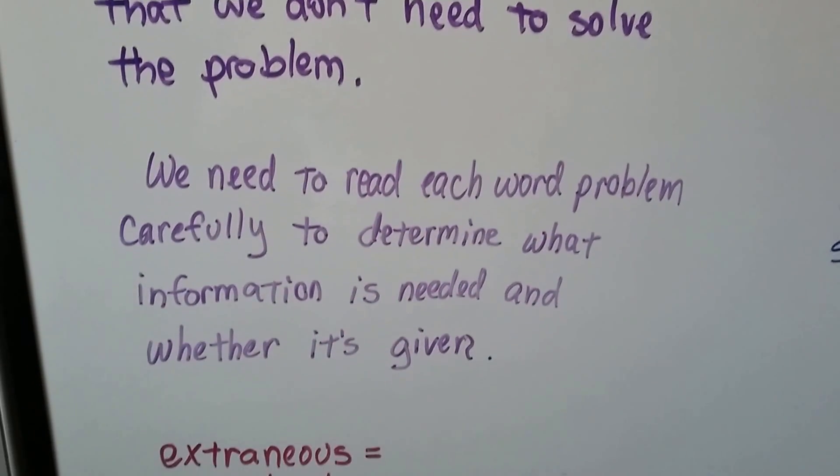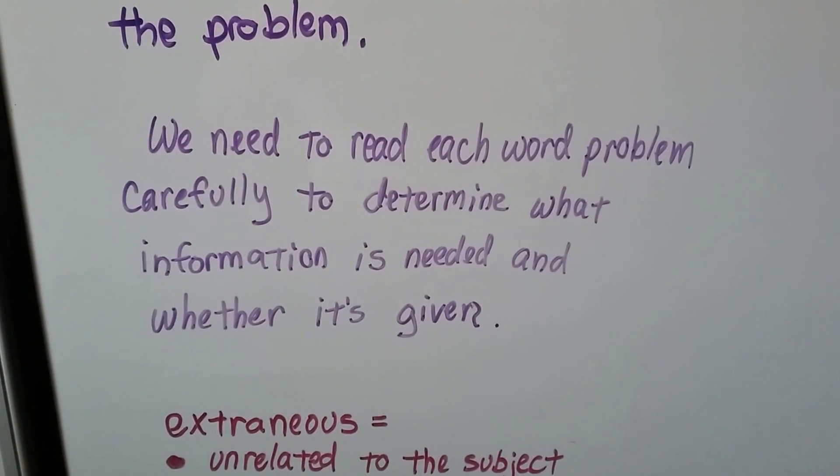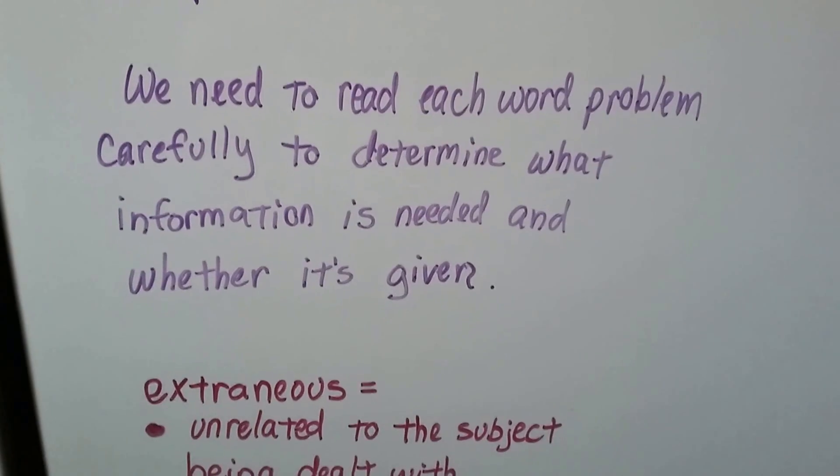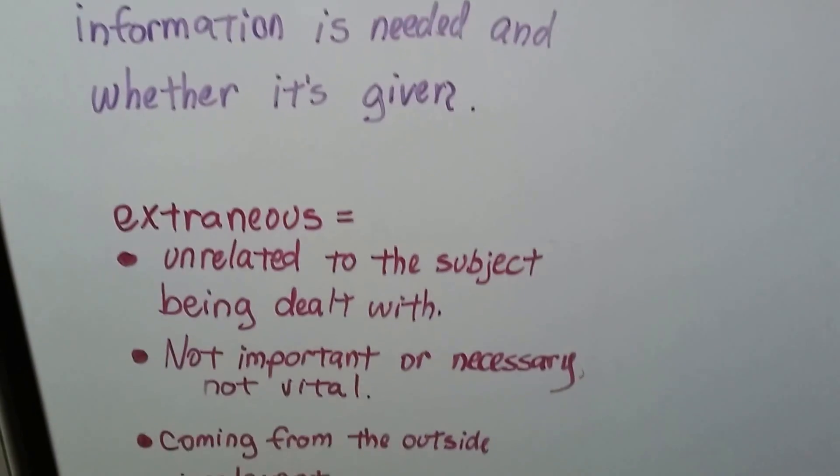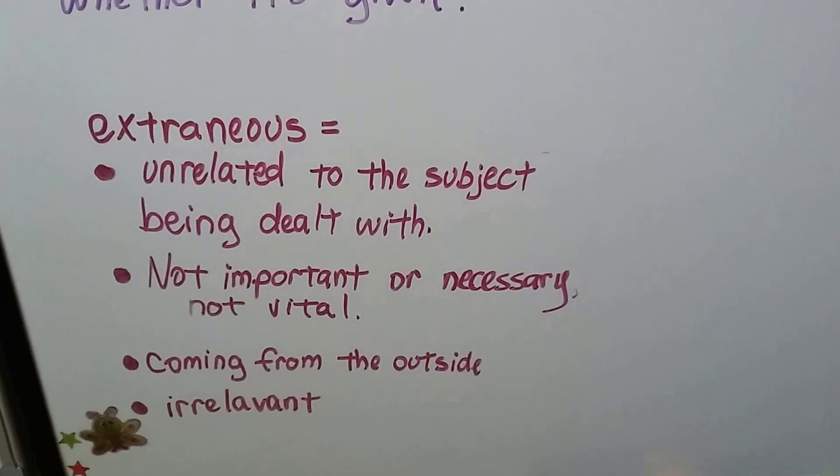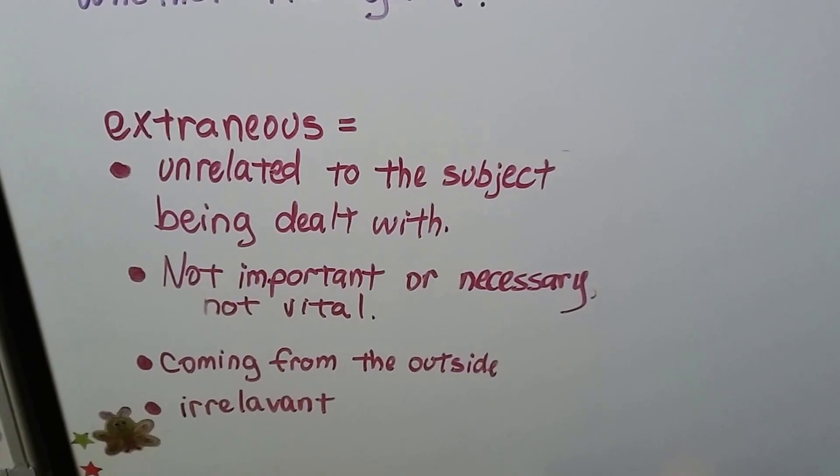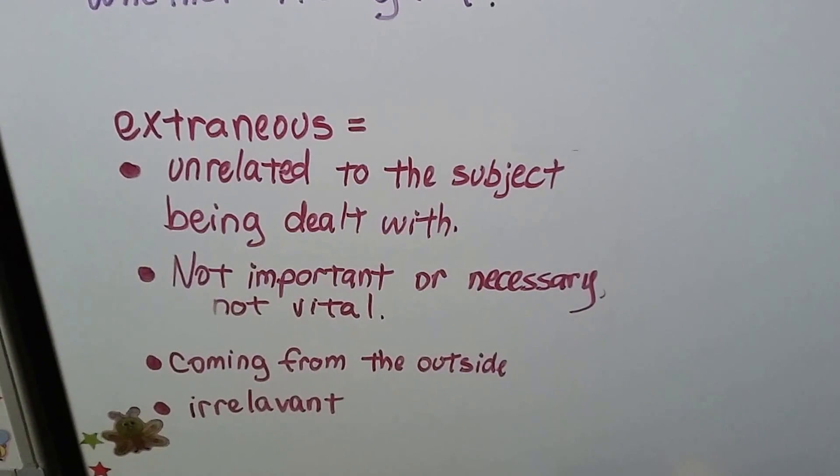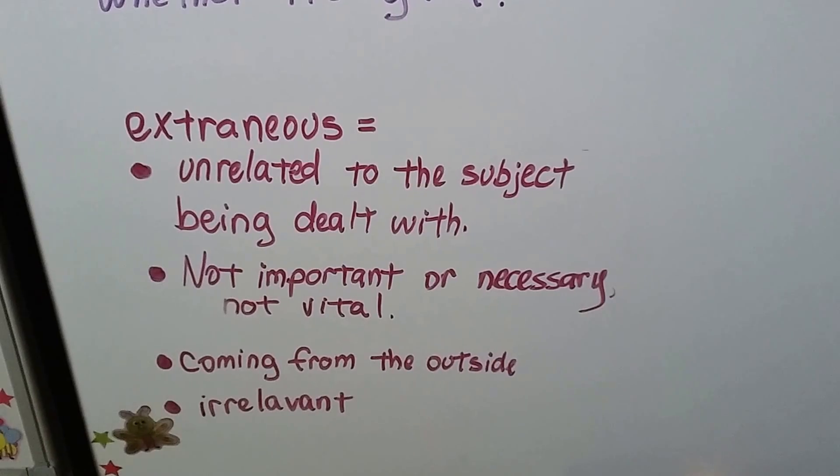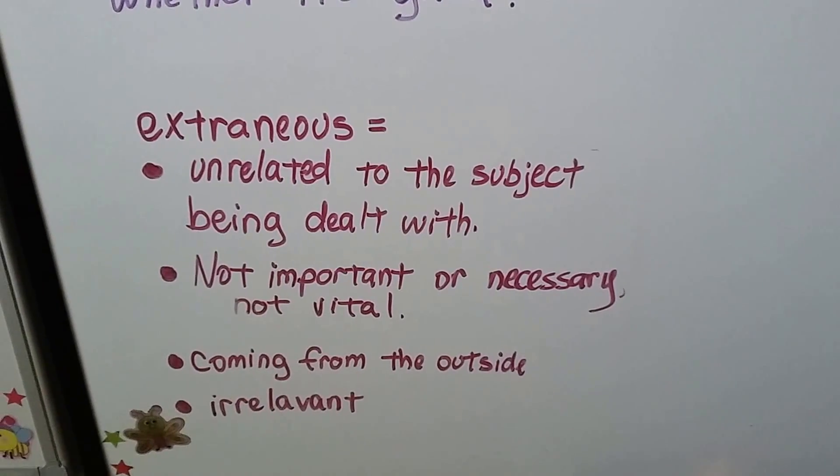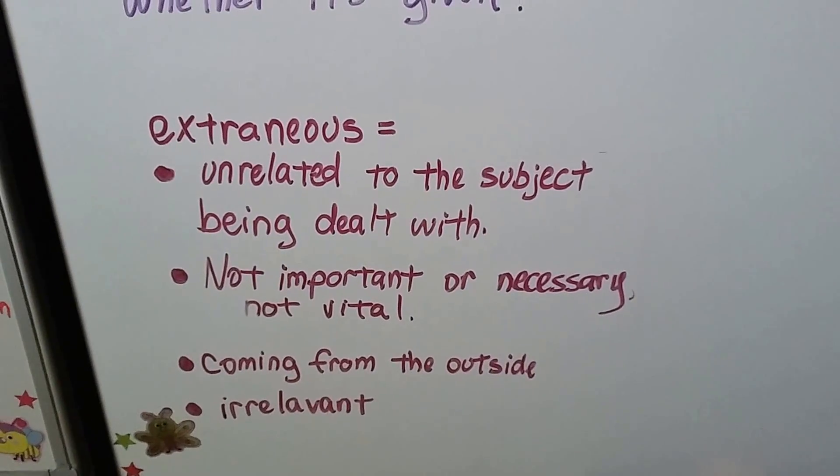We need to read each word problem carefully to determine what information is given and whether it's needed. Extraneous means it's unrelated to the subject being dealt with. It means it's not important or necessary, not vital. It also can mean coming from the outside, like extraneous heat or light comes from the outside. It means it's irrelevant.